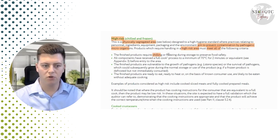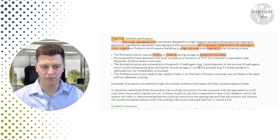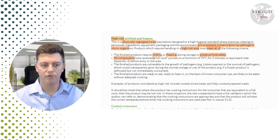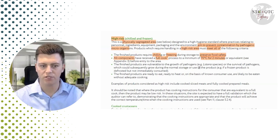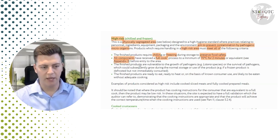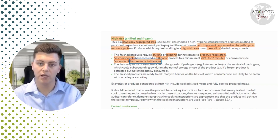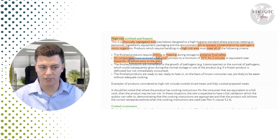First, the finished product requires chilling or freezing during storage to preserve food safety — not from a food quality point of view. Second, and very important, all components have received a full cook process to a minimum of 70 degrees for two minutes or equivalent — Appendix 3 can help with that — and that is before entry to the area. Only after that full cook process does the area become high risk.